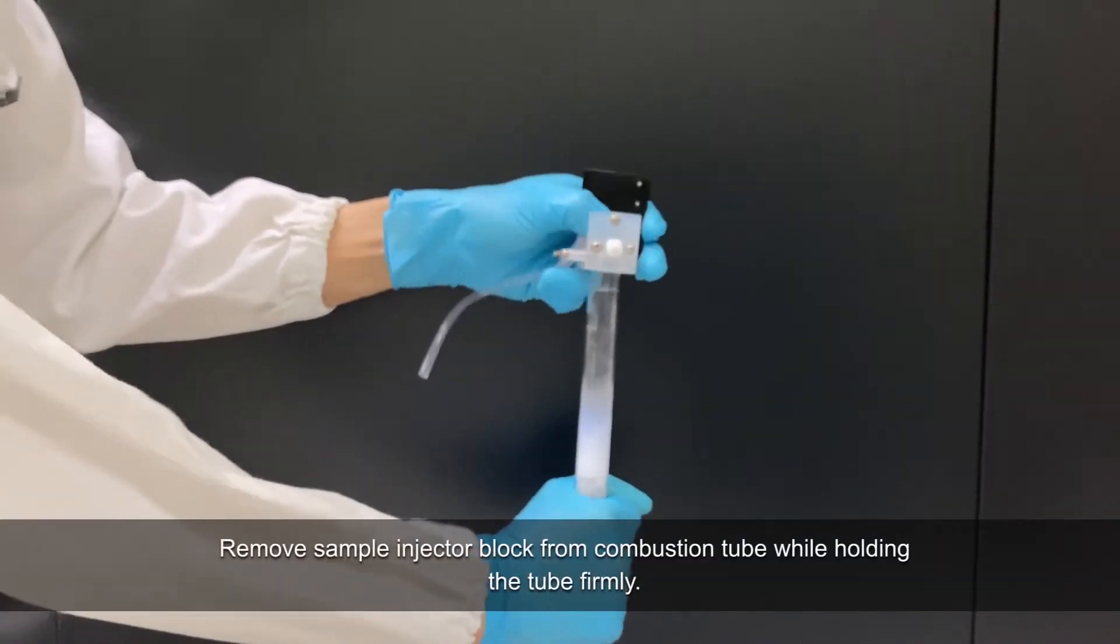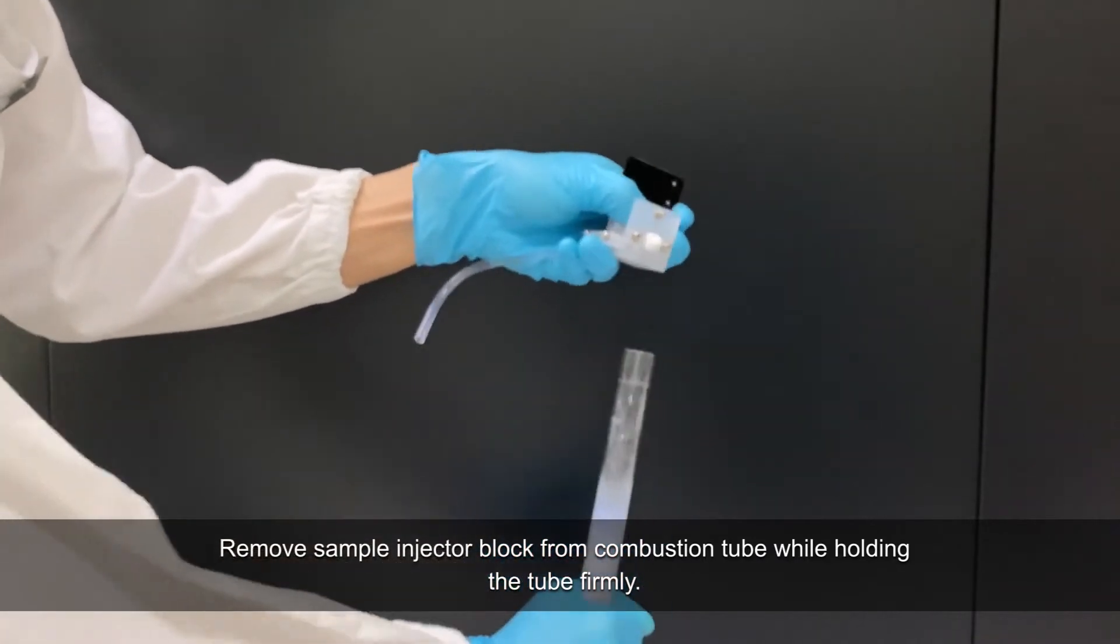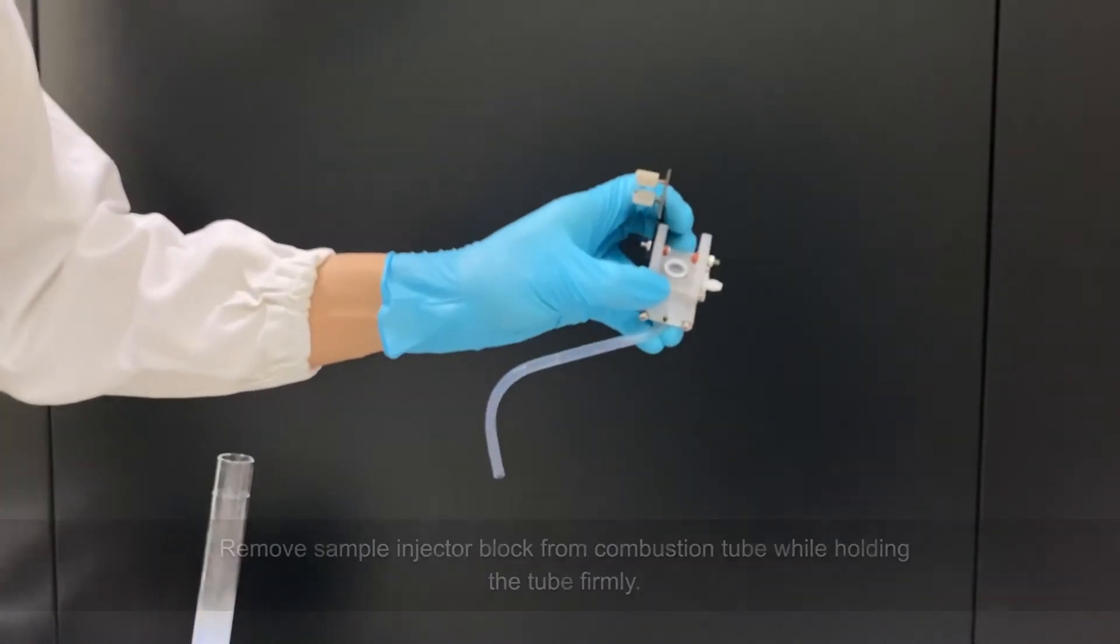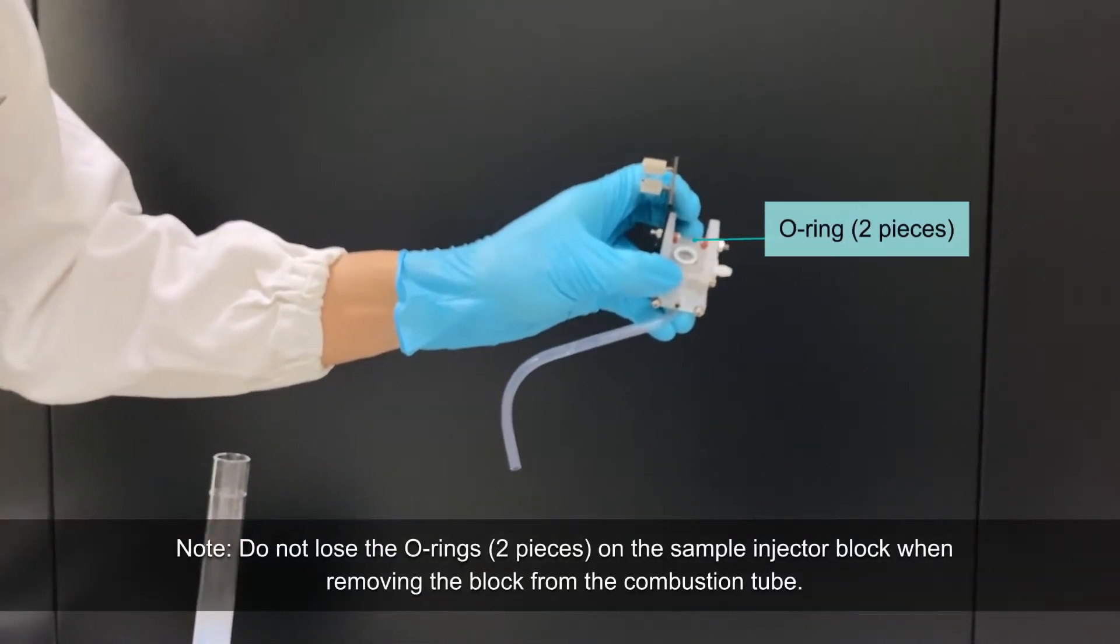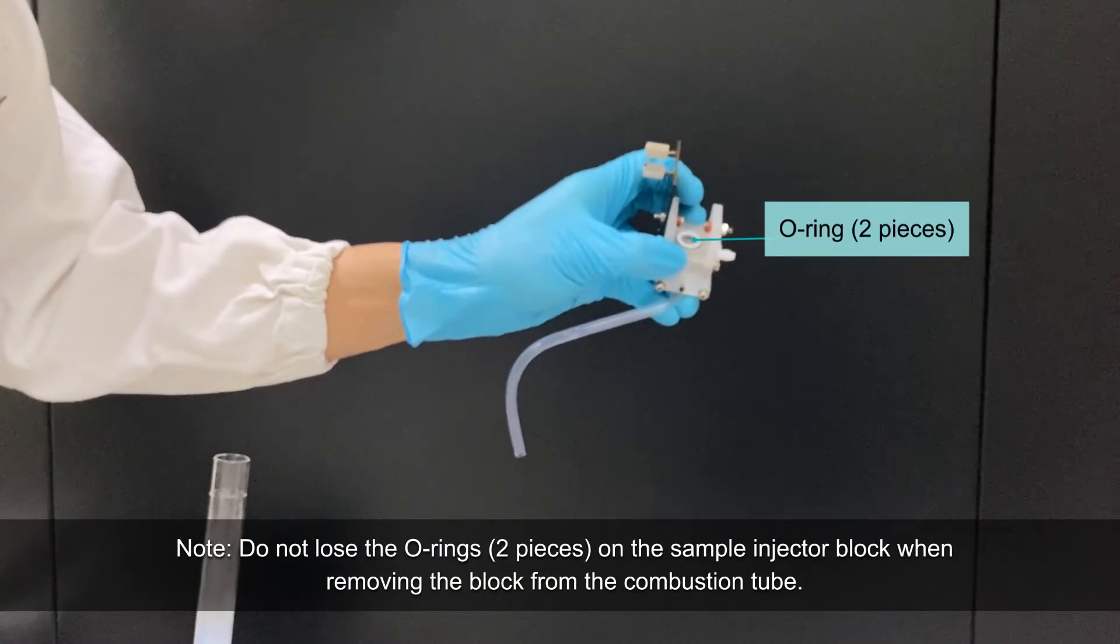Remove the sample injector block from the combustion tube while holding the tube firmly. Be careful not to lose the O-rings on the sample injector block when removing the block from the combustion tube.